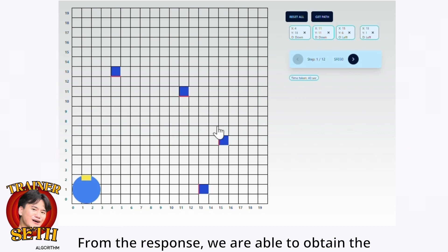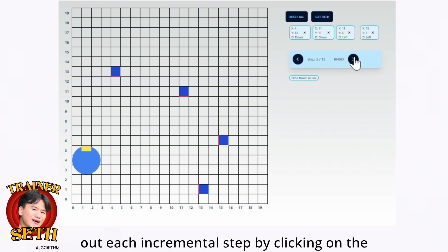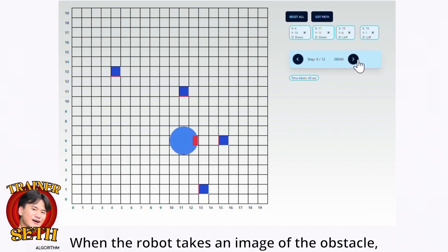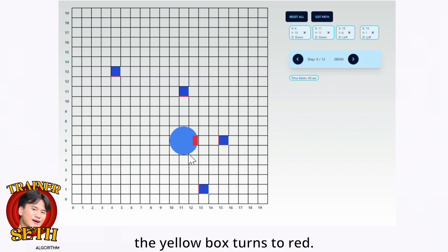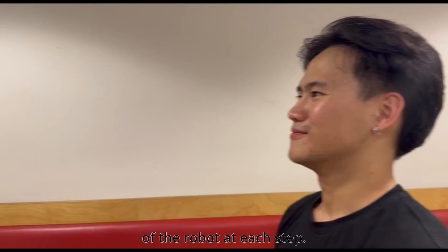From the response, we are able to obtain the series of steps the robot takes, and we can map out each incremental step by clicking the next button to see the robot move. When the robot takes an image of the obstacle, the yellow box turns red. This gives us a better idea of the position of the robot at each step.